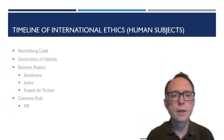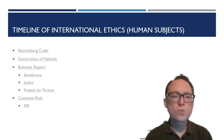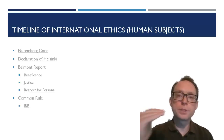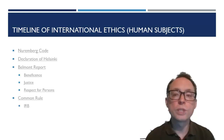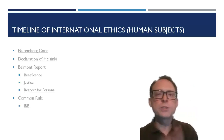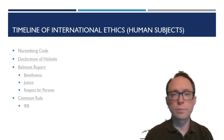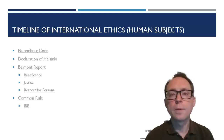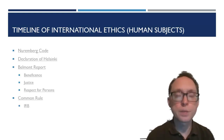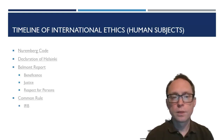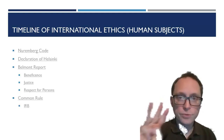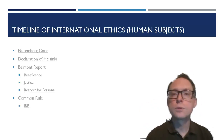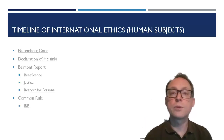After the Nuremberg Code came the Declaration of Helsinki — a treaty that many countries, including the United States, signed, saying these will be the standards we adhere to when doing research involving humans. Specific to the United States, in 1979, researchers created the Belmont Report, a guideline of what constitutes ethical research for human subjects. The Belmont Report delineated three key factors: beneficence, justice, and respect for persons.